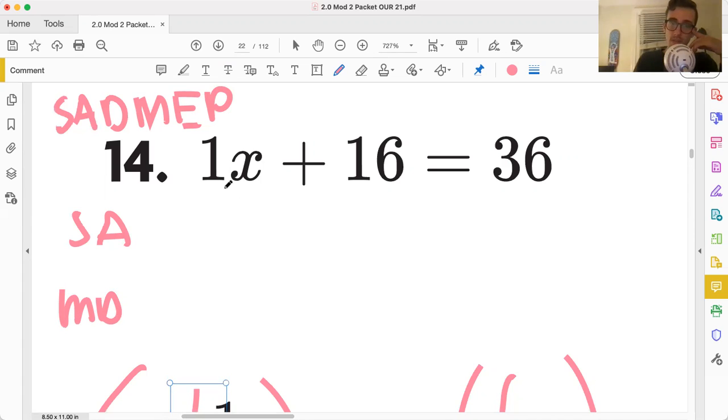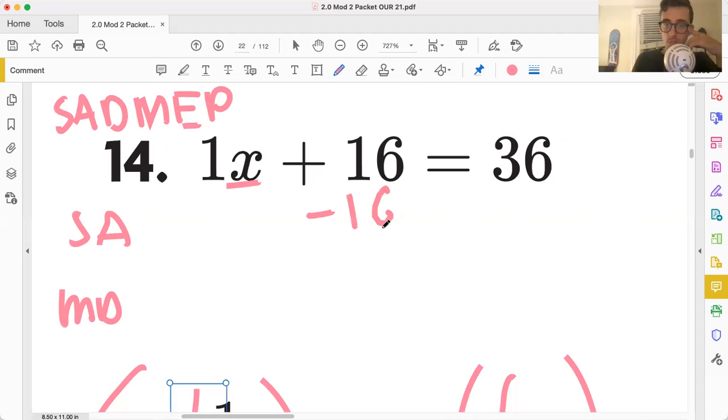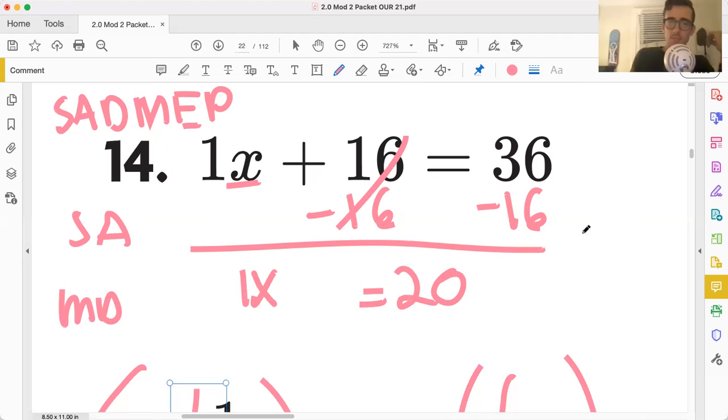So we're trying to isolate X. We see 16, and it's positive. How could we undo that? We could deduct 16 from both sides. That'd be a good move. We're now just left with 1X. This is done. 36 minus 16 is just 20. And do we really have to divide here? Do we really have to divide?